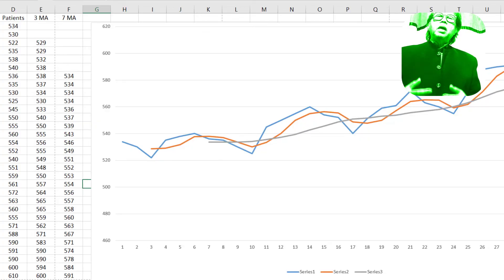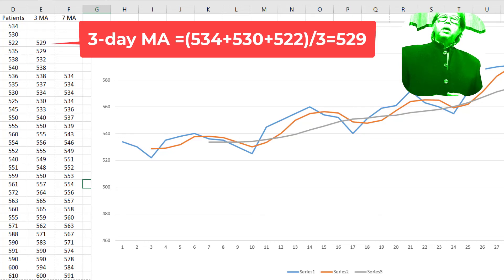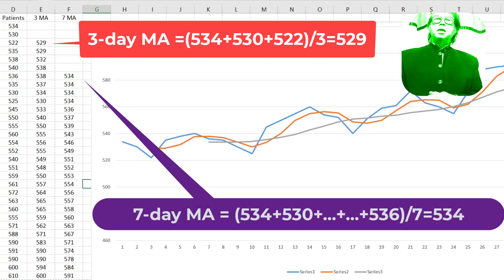So as indicated in the figure below, the blue line is the data, while the red line is 3 days moving average calculated as 534 + 530 + 522 divided by 3 equals 529. The gray line is 7 days moving average. So if you look at this, compare the gray line and the red line, the longer the moving average, the less fluctuates the series.